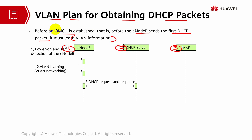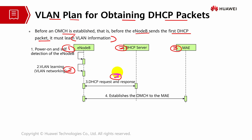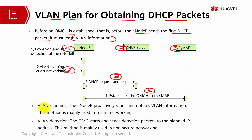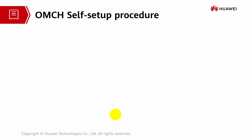Upon configuration there will be a response - that is step 1 - then step 2 involves a request and response from the DHCP server. Once there is a response, the OM channel will be established towards the MAE platform. The eNodeB will scan and obtain the VLAN information. There are two methods: scanning, which is used in secure networking, and detection, where the OMC Operation Maintenance Center sends a detection packet to the planned IP address, which is used for non-secure networking. VLAN configuration is essential to ensure packets are sent and synchronized without congestion.